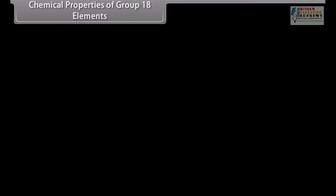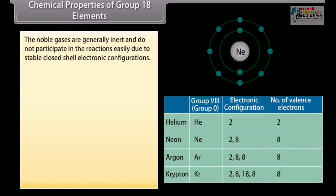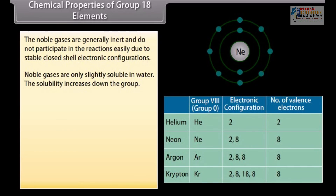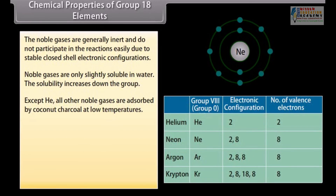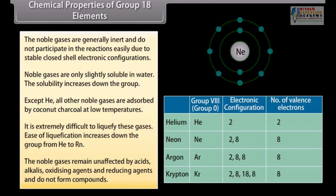The noble gases are generally inert and do not participate in reactions easily due to stable closed shell electronic configurations. Noble gases are only slightly soluble in water; solubility increases down the group. Except helium, all other noble gases are absorbed by coconut charcoal at low temperatures. It is extremely difficult to liquefy these gases; ease of liquefaction increases down the group from helium to radon. The noble gases remain unaffected by acids, alkalies, oxidizing agents and reducing agents, and do not form compounds.